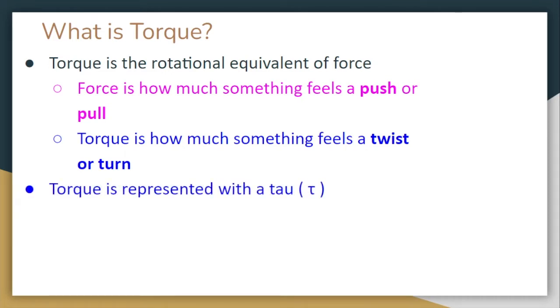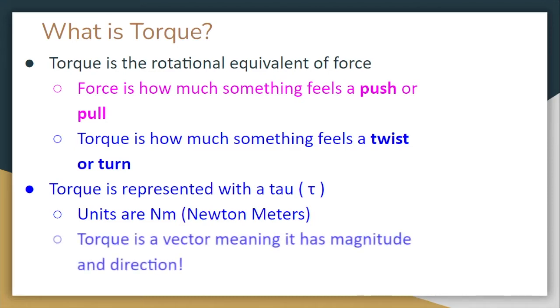Torque is going to be represented with the letter tau. It kind of looks like a little baby T with a backwards bottom. The units of torque are going to be Newton meters, and we'll understand where those units come from in a sec when we take a look at the equation. Torque is a vector, which means it has magnitude and direction. Same with force, because force was a vector that had magnitude and direction.